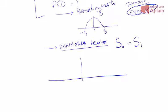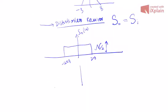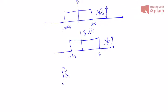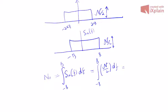We assume the noise to be white Gaussian noise. Changing notation slightly, let the height of the power spectral density be N/2 — following the book's notation. So S_n(f) spans from −B to B with height N/2. The total noise power is then the integral of S_n(f) df from −B to B, which equals N·B. So the noise power N₀ equals N times B.